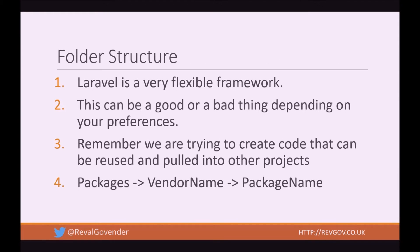Folder structure: Laravel is a very flexible framework, which can be a really good or really bad thing depending on your preferences. We are trying to create code that can be reused and pulled into other projects — creating this little ecosystem. In your Laravel root, you're going to create a new folder called packages, then a folder for your vendor name, then another for the package name. Vendor name refers to you personally — for me it would be Ravel Govender — or it can be a company name. The package name will be the name of your feature. So for a blog example, the path would be: packages/RavelGovender/blog.